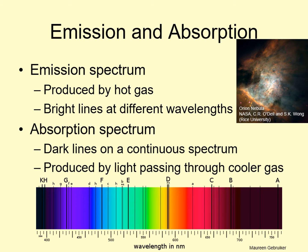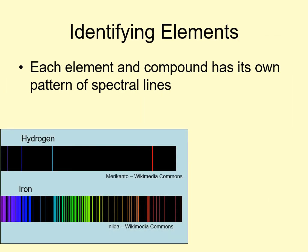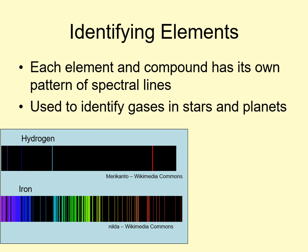An example of this happens when we look at the light from the sun. The sun's surface produces a thermal spectrum, but then the light passes through the sun's atmosphere, and later through the Earth's atmosphere. Both of these produce absorption lines in the sun's spectrum when we observe it from Earth. Each chemical element and each compound has its own pattern of absorption and emission lines, and this pattern is the same whether you're seeing it in emission or in absorption. These act as a sort of fingerprint, telling us which gases are present.